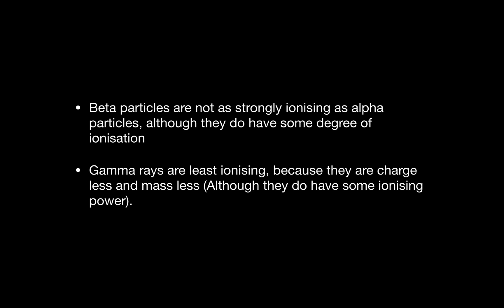Gamma rays are least ionizing because they have almost no mass and no charge. Although they do have some ionizing properties, it is almost negligible. So this is the order: most ionizing to least ionizing is alpha, beta, gamma.